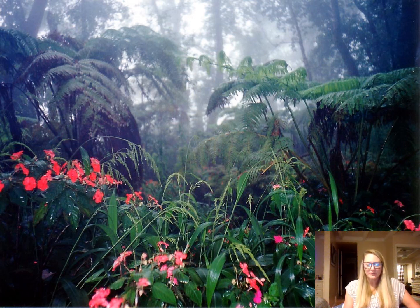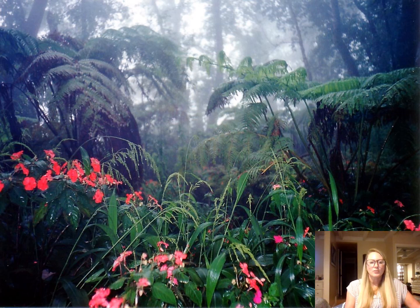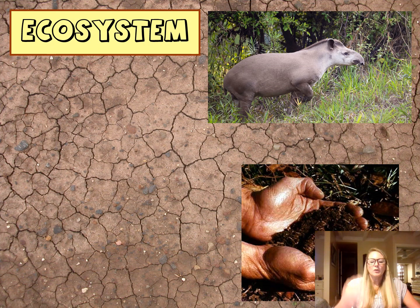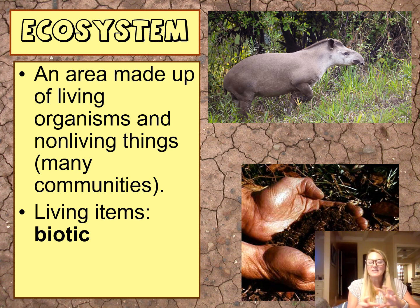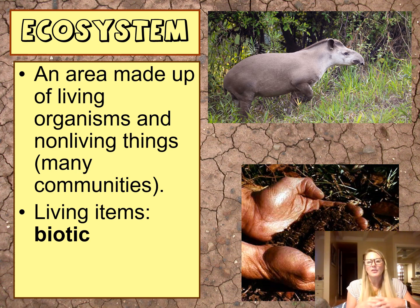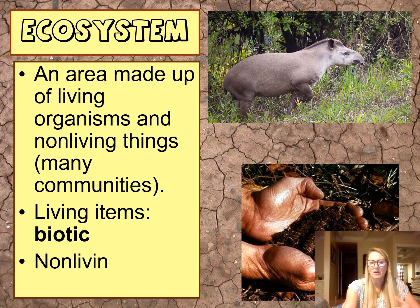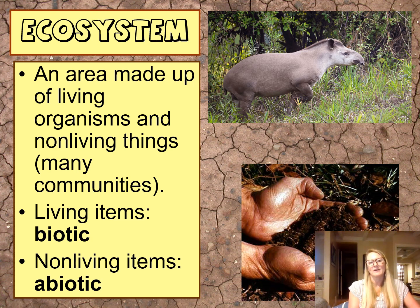This picture here shows more of a terrestrial community — you can see different species of plants all growing in the same area. When you put a whole bunch of communities together, you get what's called an ecosystem. Ecosystems can be quite large, with many different living organisms interacting together, along with many non-living components also involved in the ecosystem.